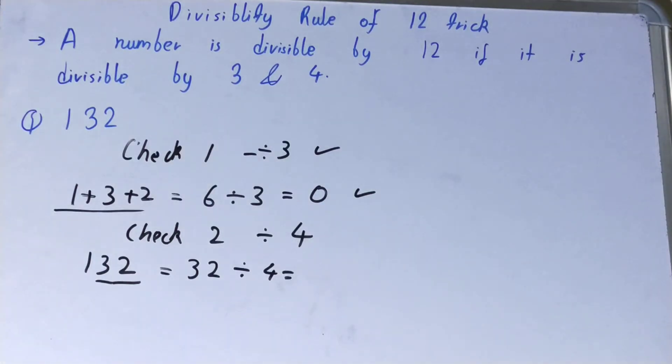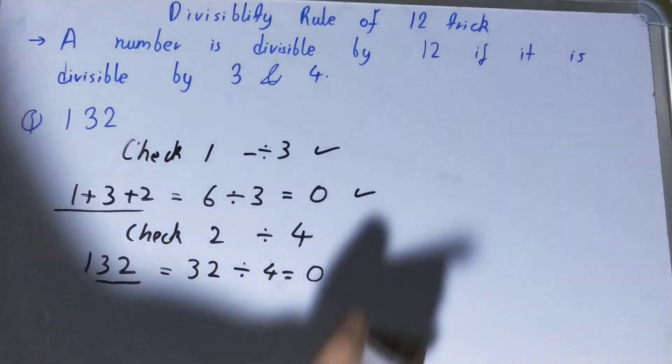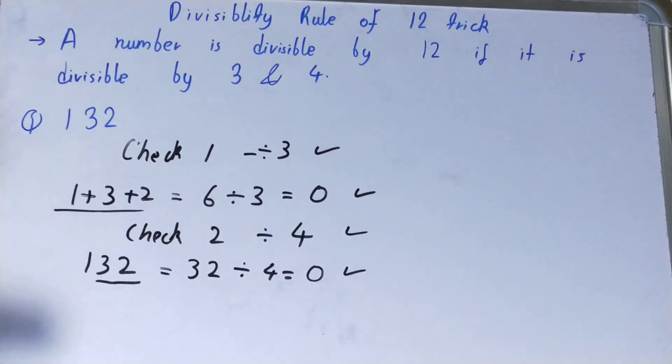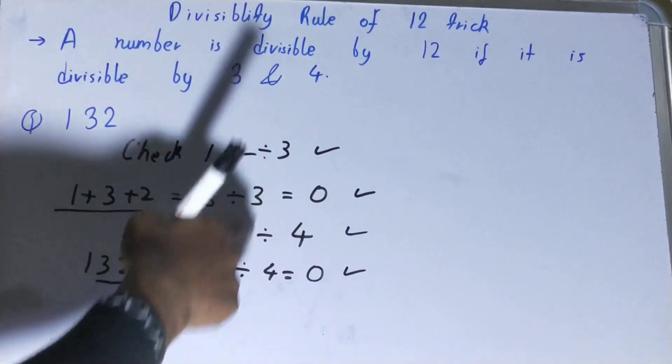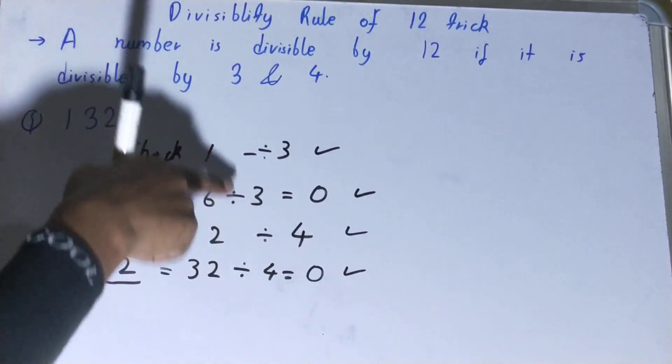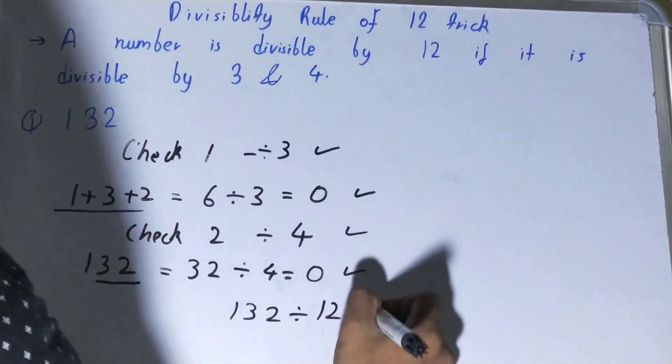So if you get the remainder as 0, in that scenario the particular check is passed, or you can say it is divisible. And ultimately, if both the checks are performed - that is, it is divisible by 3 also and 4 also - you can say it is divisible by 12 as well.